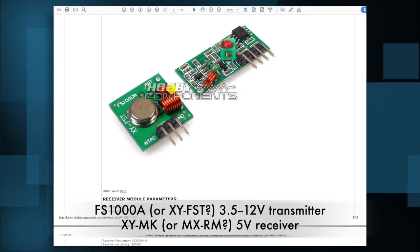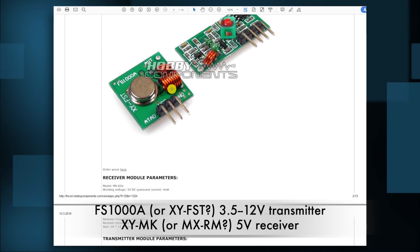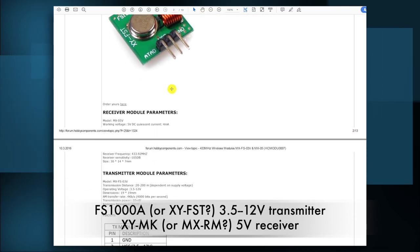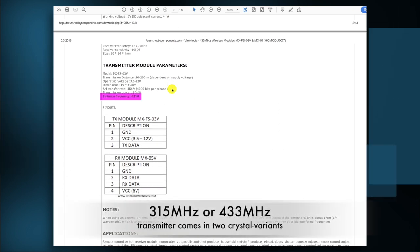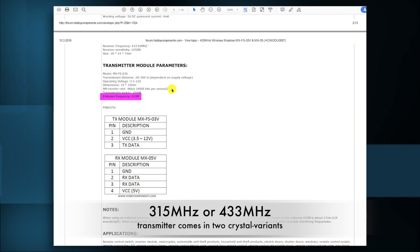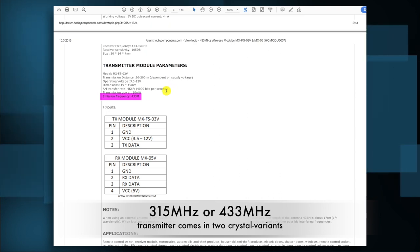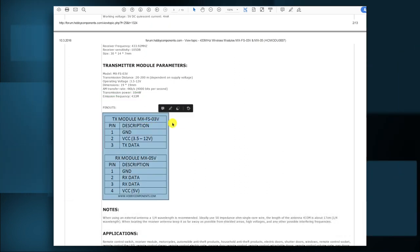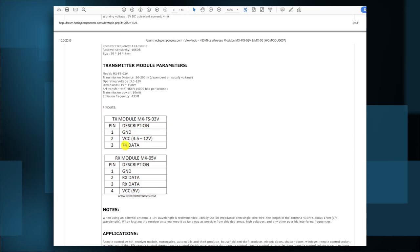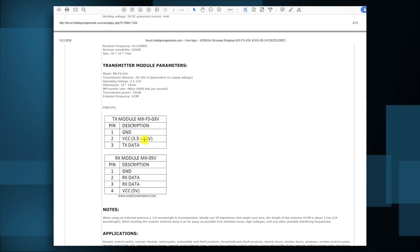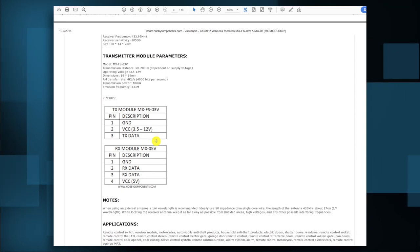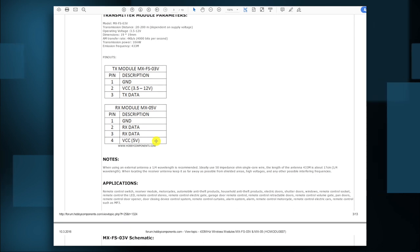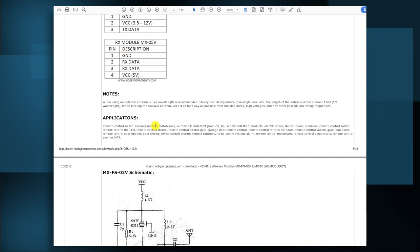But some time ago I came across this FS1000A and XYMK receiver and transmitter. These are modules that either come in 315 megahertz or 433 megahertz. This is the datasheet of the 433 megahertz. It goes by another name, MXFS03, but it's the same transmitter with only three pins: ground, VCC, and TX data. So you directly feed it from a digital output of your Arduino.